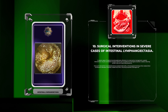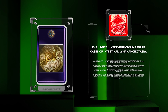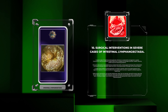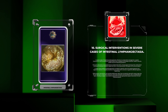In severe cases of intestinal lymphangiectasia refractory to conservative management, surgical interventions may be considered. Surgical options aim to bypass the damaged lymphatic vessels, reducing protein loss and improving symptoms. One such intervention is lymphaticovenous anastomosis (LVA), a microsurgical technique that creates direct connections between lymphatic vessels and veins, rerouting lymphatic drainage into the venous system.